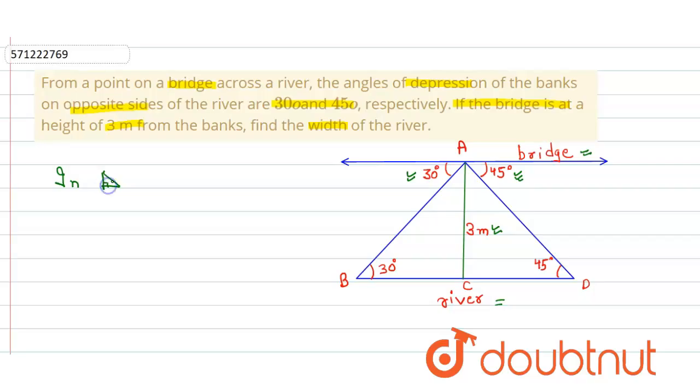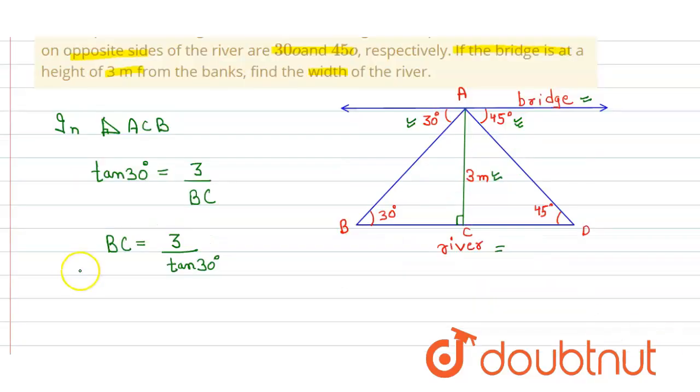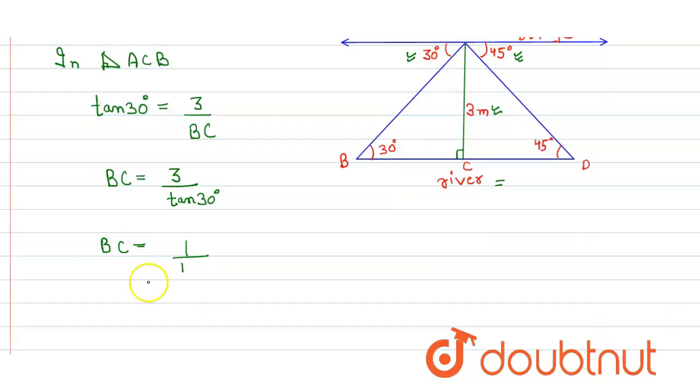In triangle ACB, first we take tan 30 degrees. So tan 30 degrees equals 3 upon BC. From here we get BC equals 3 upon tan 30 degrees. The value of tan 30 degrees is 1 upon root 3.